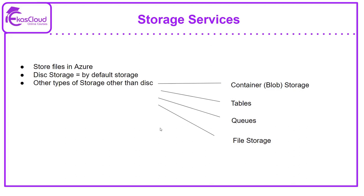Next is storage services. As the name implies, it stores files in Azure. For example, if you are creating a virtual machine, you will get a storage device called disk storage by default. Other than that, you can request Azure to get more storage spaces. Besides disk storage, there are four main kinds of storage systems available in Azure: container or blob storage, tables, queues, and file storage.